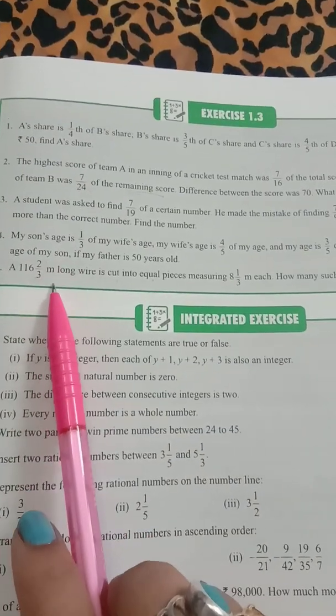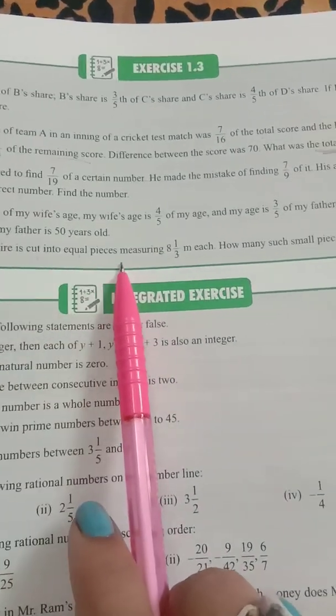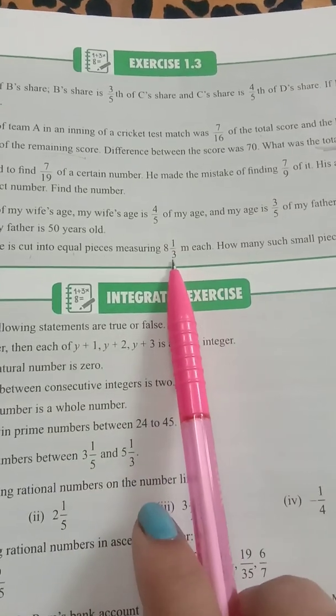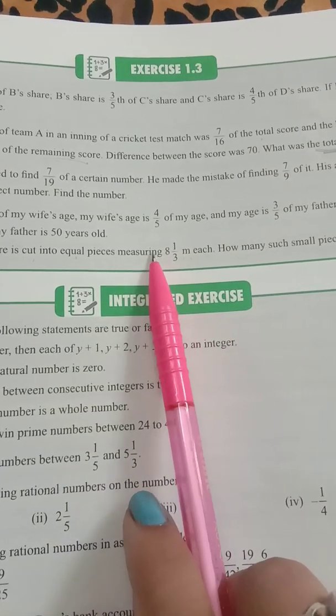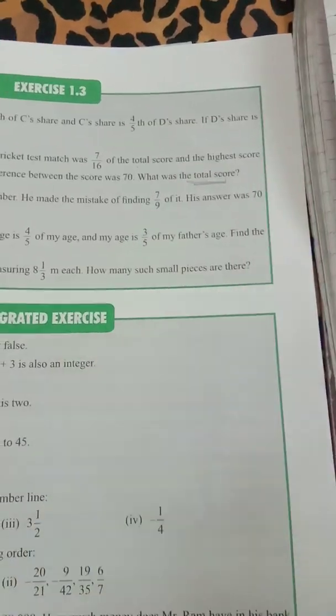A 116 2 upon 3 meters long wire, this is the length of the wire, is cut in equal pieces of measuring 8 1 by 3 meters each. So one piece, equal pieces, 8 1 by 3 meters. How many such pieces are there? So you have to find number of pieces.